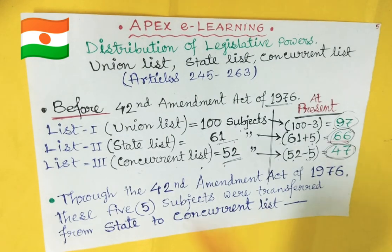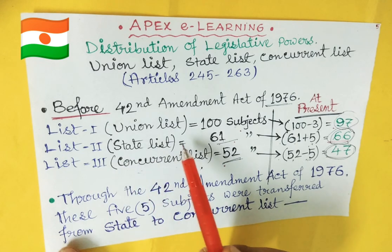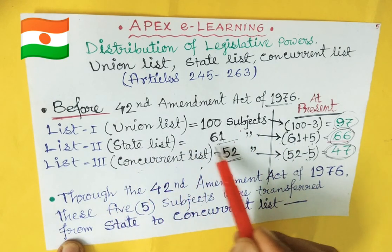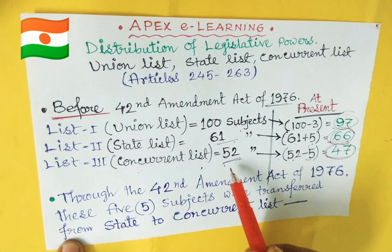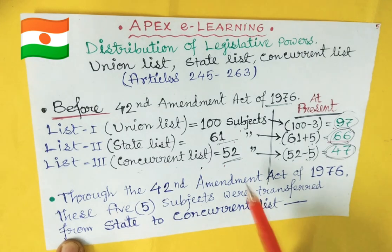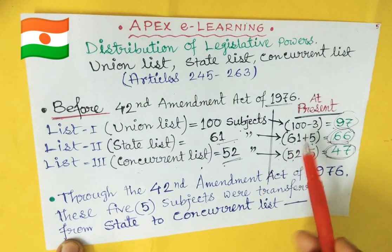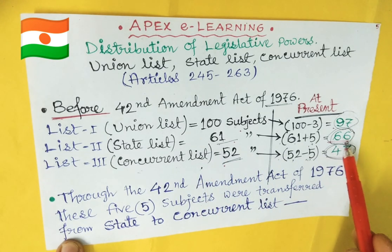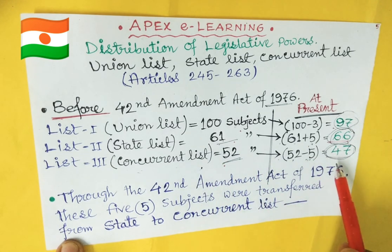First, there are three lists. List one, the union list, had 100 subjects. List two, the state list, had 61 subjects. And list three, the concurrent list, had 52 subjects. After the 42nd Amendment Act of 1976, presently the union list has 97 subjects, the state list has 66 subjects, and the concurrent list has 47 subjects.